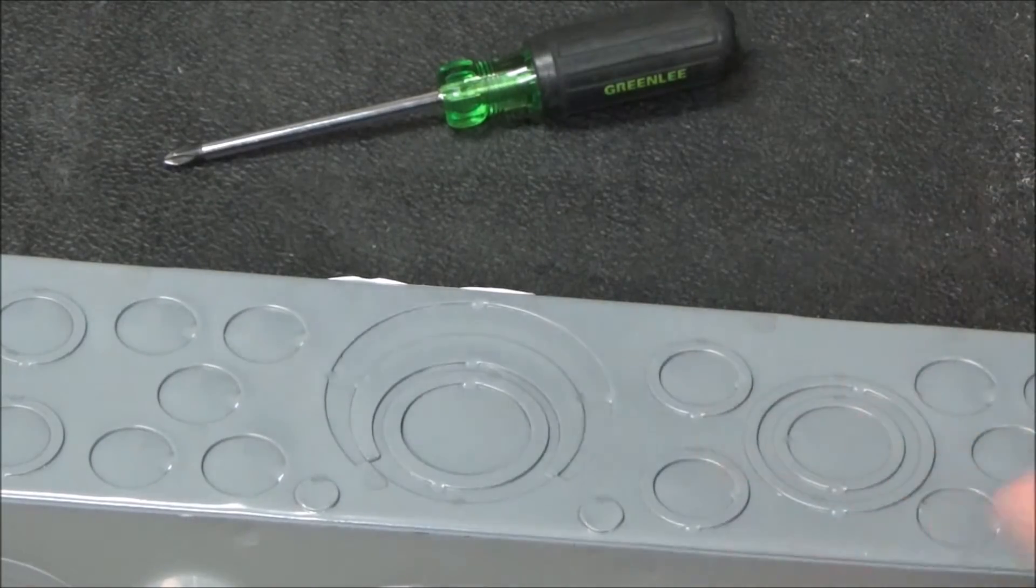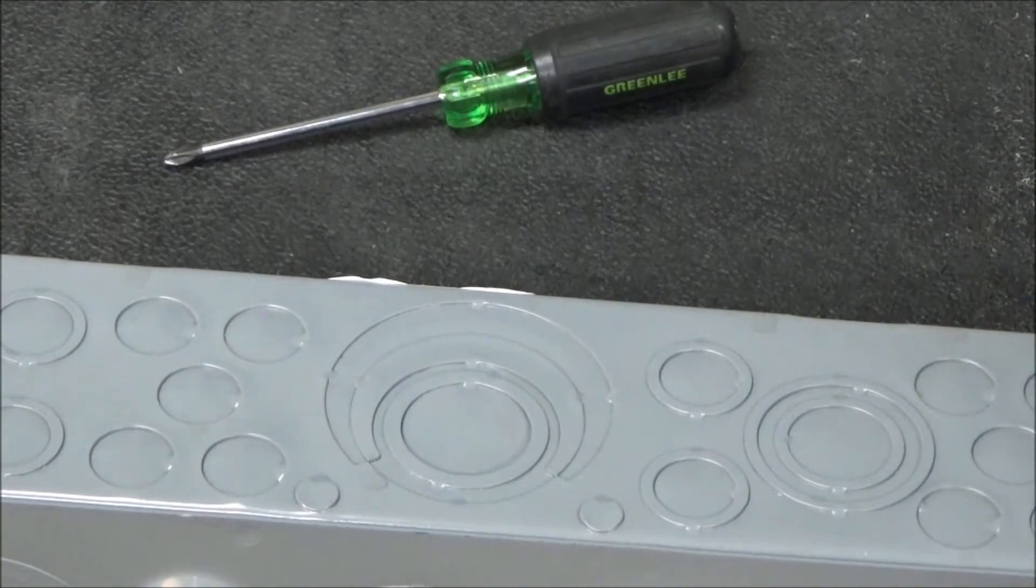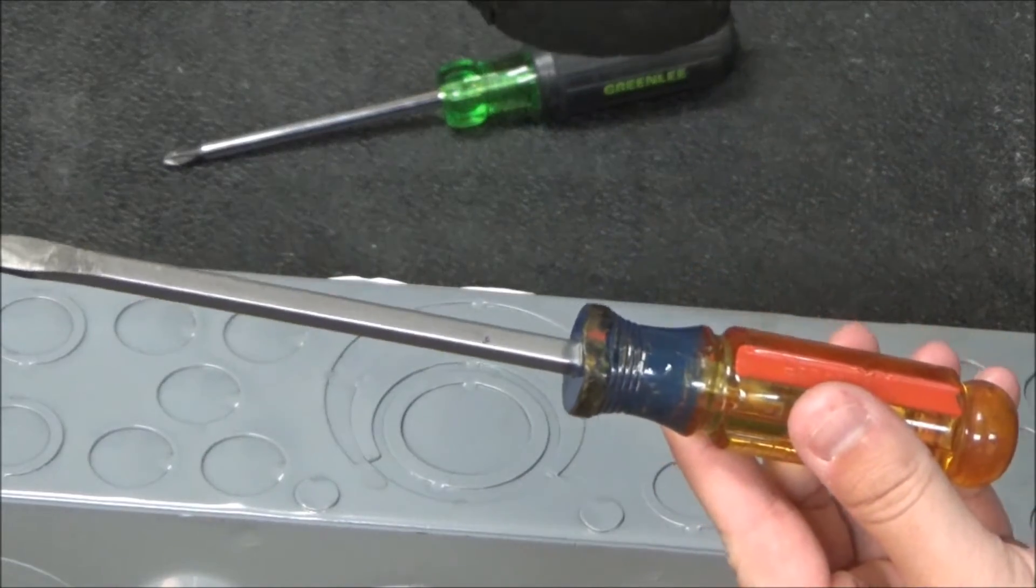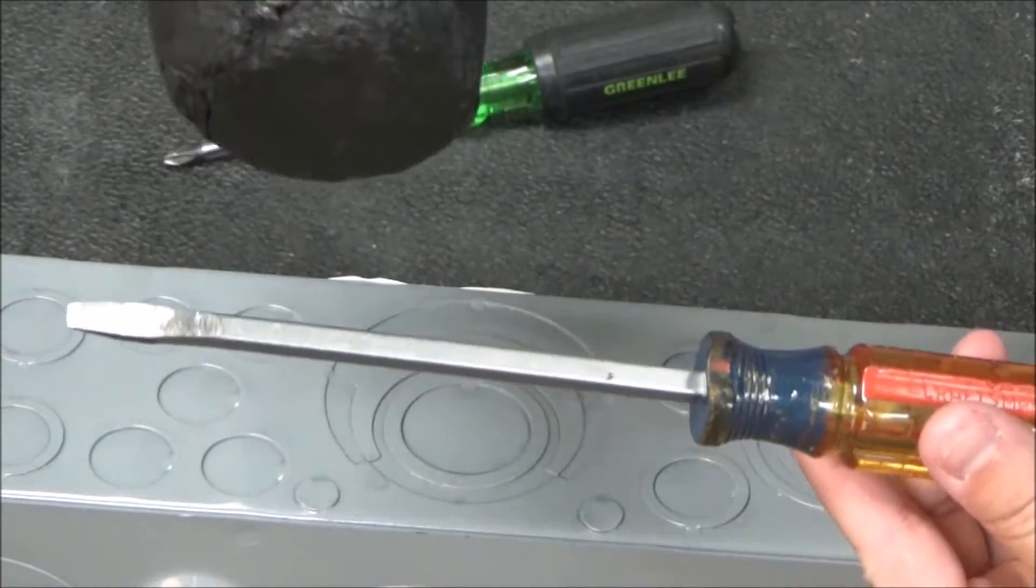Now we're going to show you how to remove the knockouts. For video purposes, I will be using a flathead screwdriver and a rubber mallet.